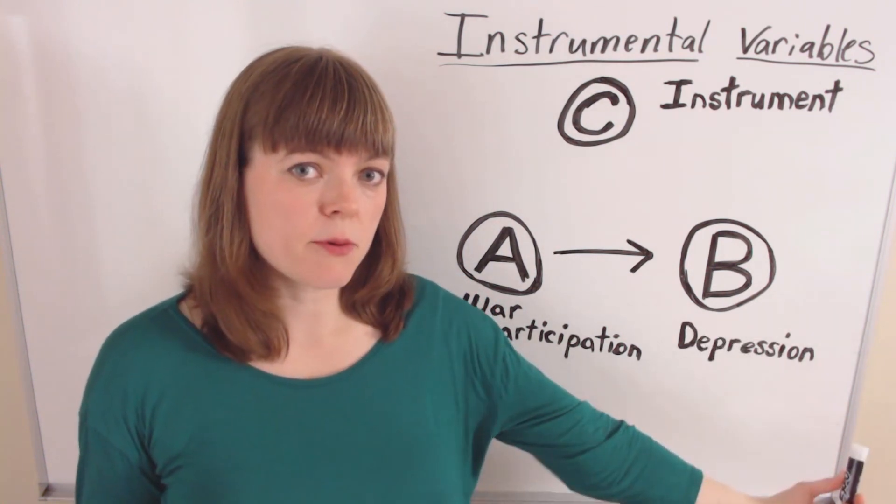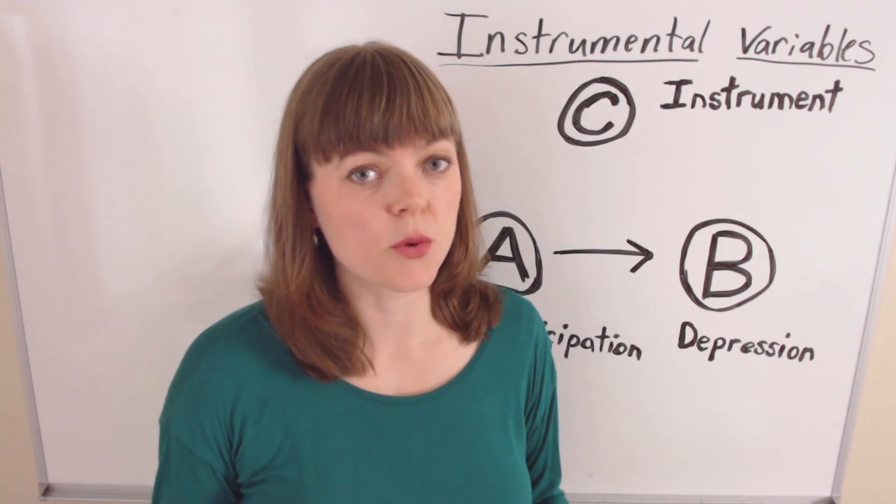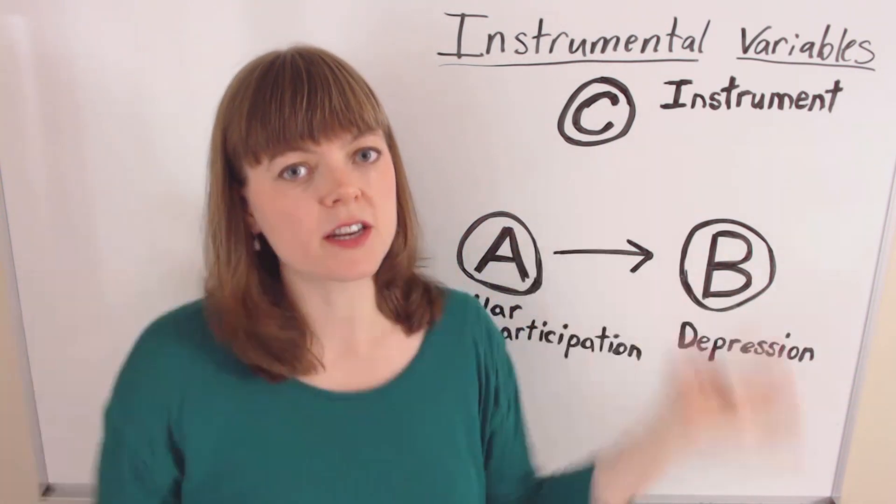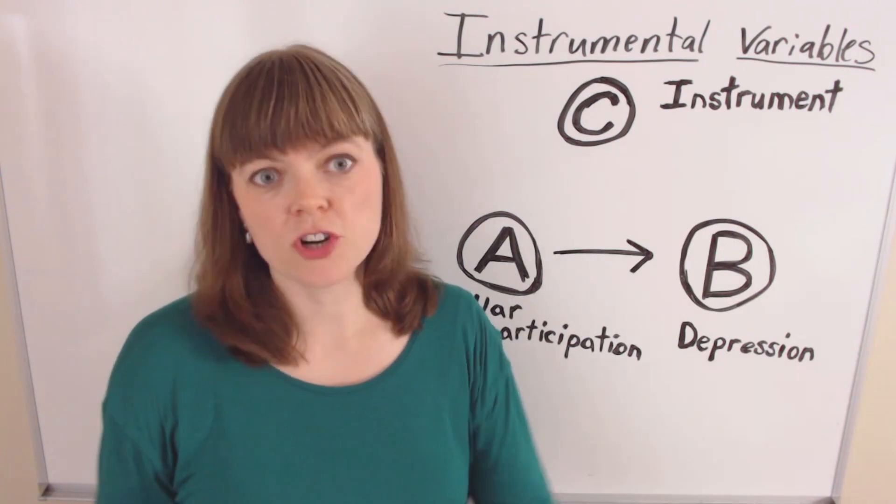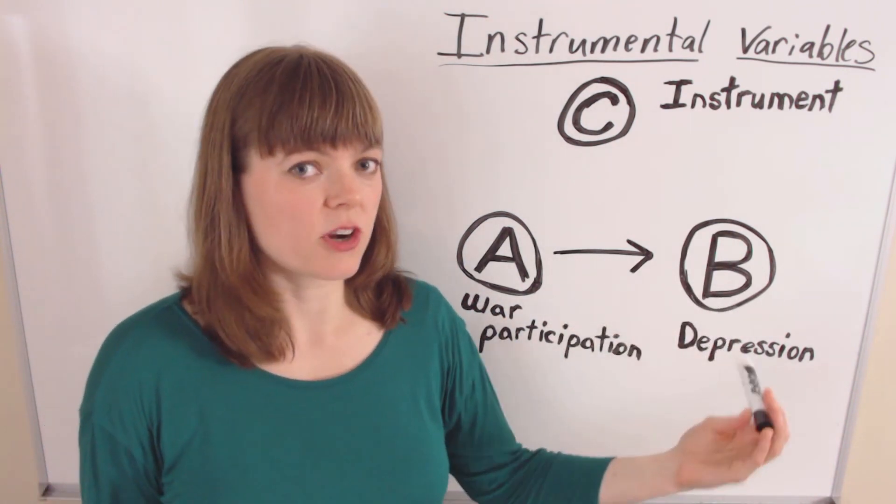For example, it could be that the type of person who is prone to depression is more likely to sign up to go to war, which would be reverse causation. There could be a million different other alternative causal pathways. So we want to know if this is an accurate causal pathway.